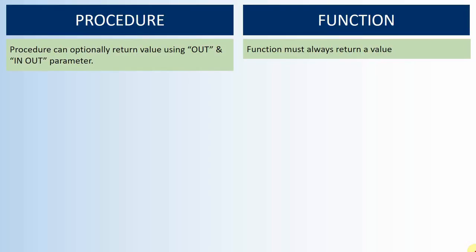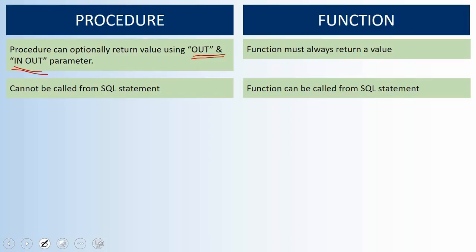In a procedure, we can have any number of return values, but we won't call it a return value in a procedure. We'll call it an OUT parameter. So we'll be using either an OUT or an IN OUT parameter to return information from the procedure.